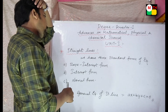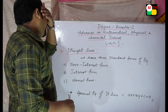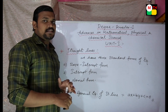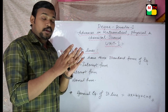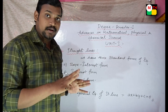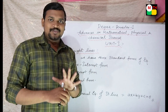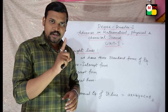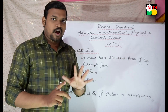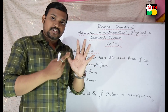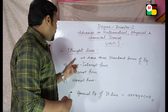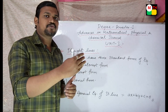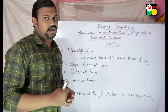In this topic, we will see Unit 1. We will cover straight lines. In Unit 1 Mathematics, there are 4 topics. The first topic is straight lines. The next topics are differentiation and integration.